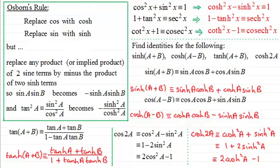I hope that's given you some idea of how we can apply Osborne's rule when we know our basic trigonometric identities. It's so easy to convert across to the equivalent hyperbolic identities.